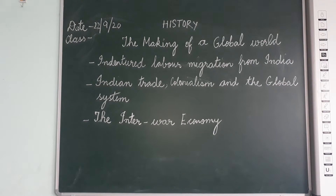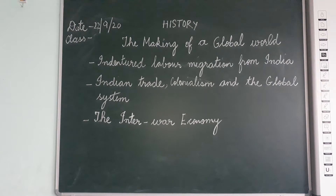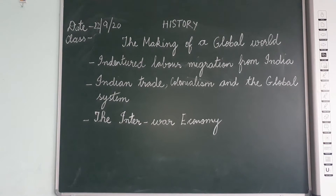In the 19th century, thousands of Indian and Chinese labourers went to work on plantations, in mines, and in road and railway construction projects all around the world. Then in the mid 19th century, the areas from where the indentured workers came experienced many changes.